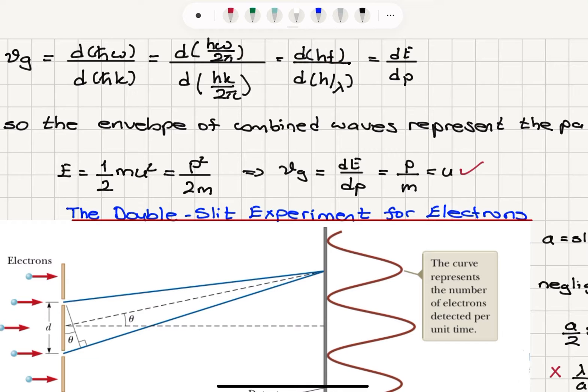And omega over 2 pi is frequency, so we get dhf divided by k over 2 pi. Because k is 2 pi over lambda, this becomes dh over lambda. So that is dE dp.